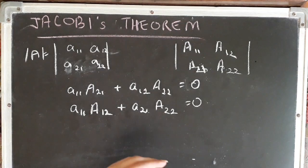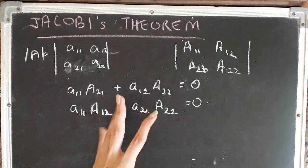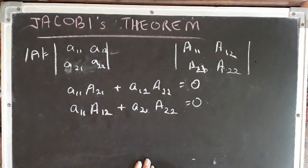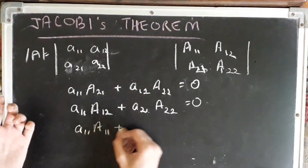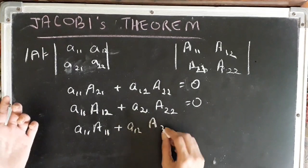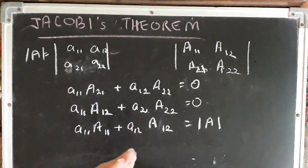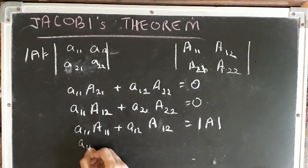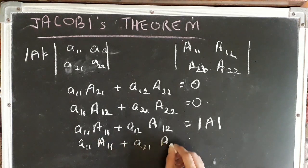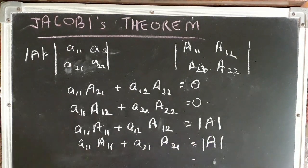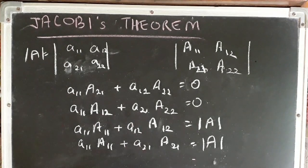This is done row-wise, and column-wise it is also applicable: a11·A12 + a21·A22 = 0. However, the product of the elements of a row or column with the corresponding cofactors of the same row or column gives the value of the determinant. That is, a11·A11 + a12·A12 = delta, and this is applicable column-wise as well: a11·A11 + a21·A21 also gives the value of the determinant. These two things are very important before we proceed with Jacobi's theorem.